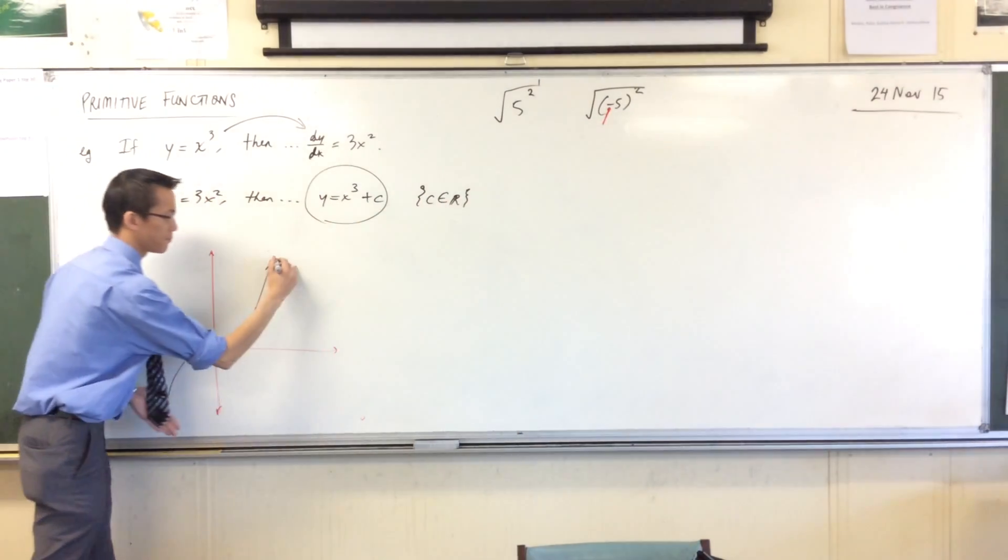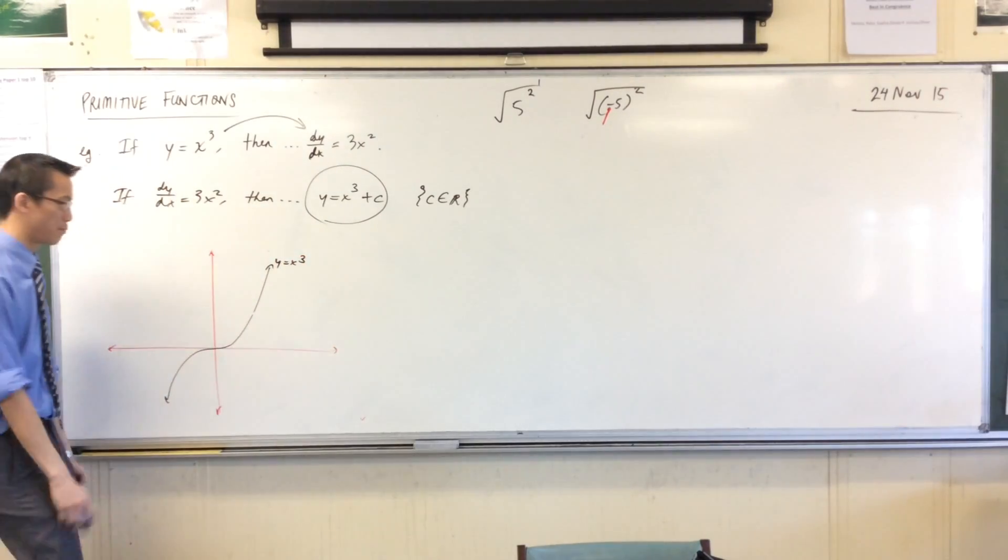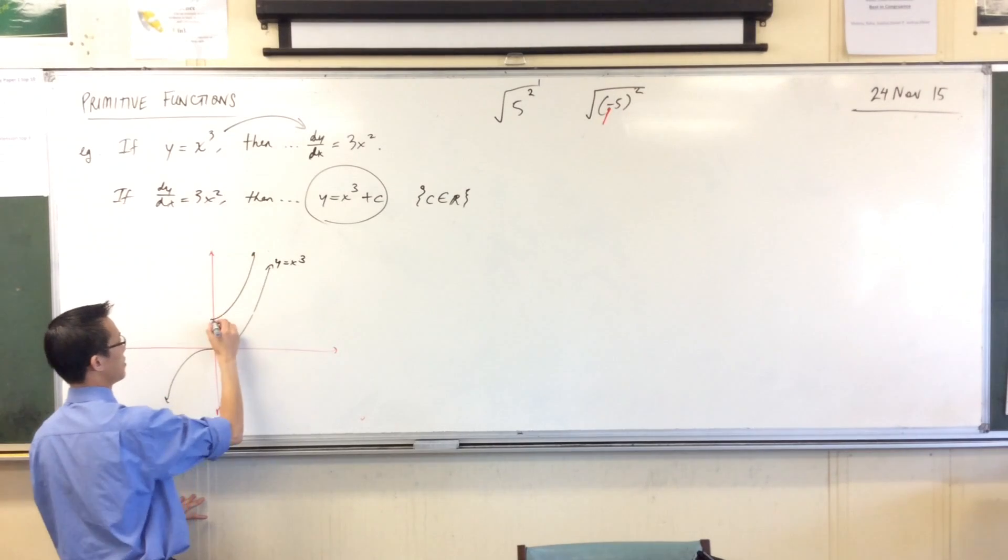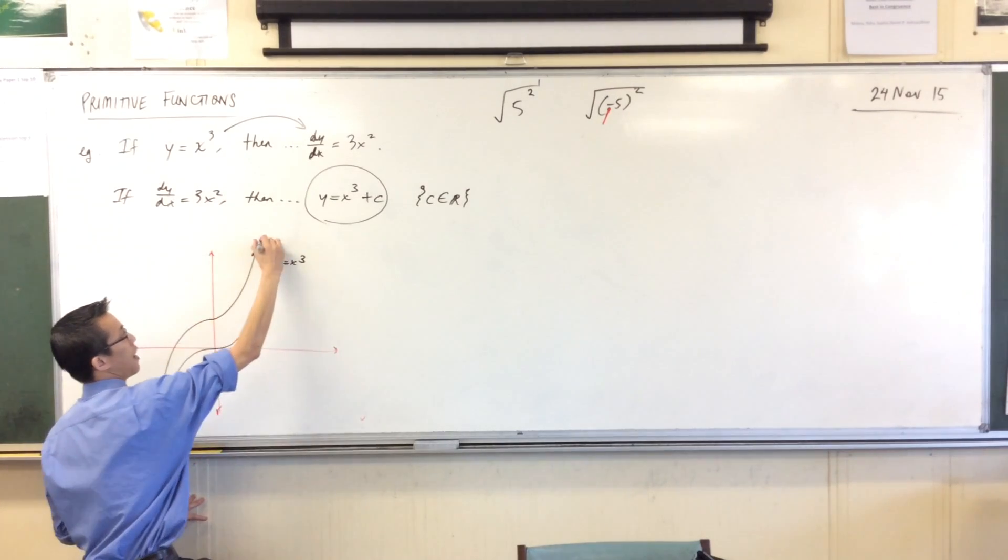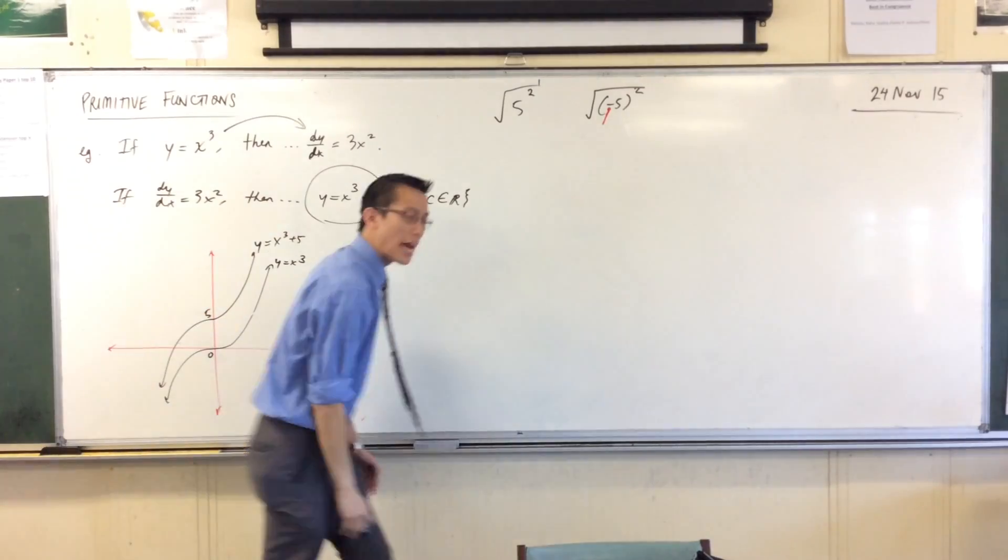So for instance, if I had y equals x cubed, I could very easily plot on here y equals x cubed plus, well, you pick a number. Five. Five, that'll do. Y equals x cubed plus five, and there's my intercept.